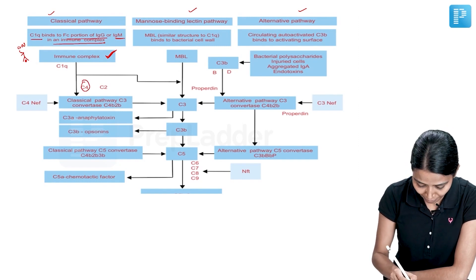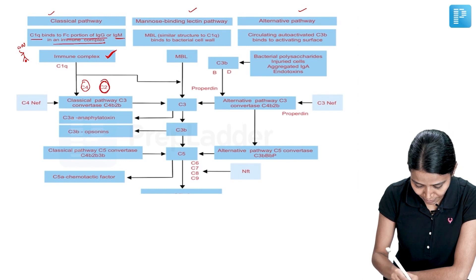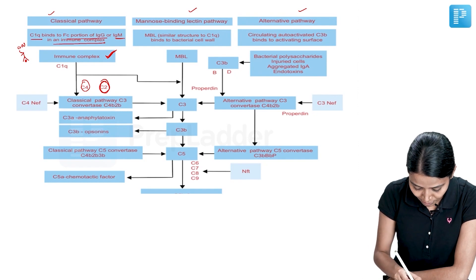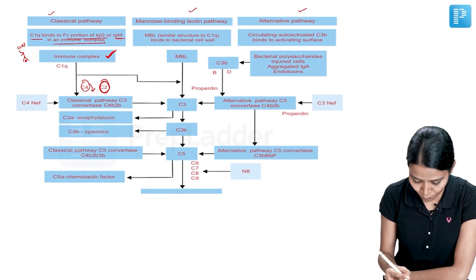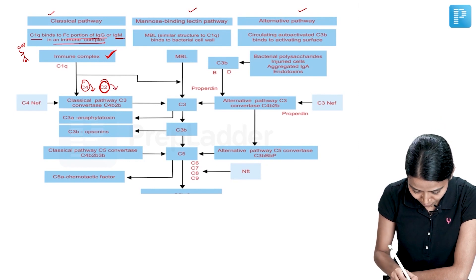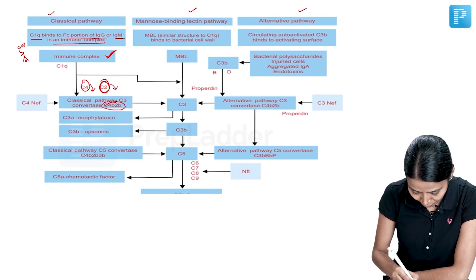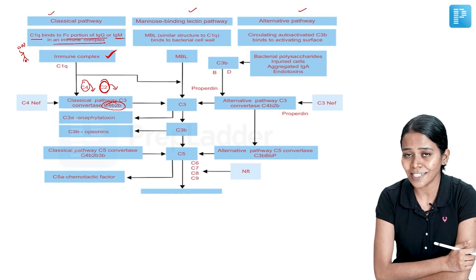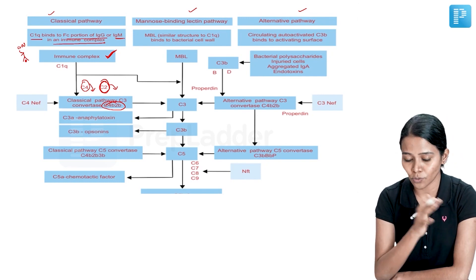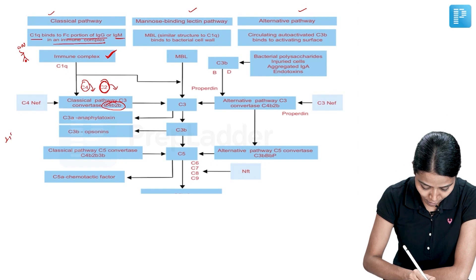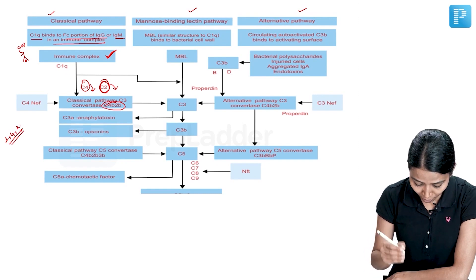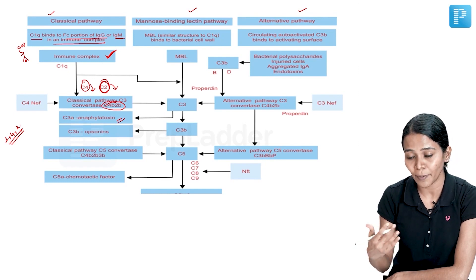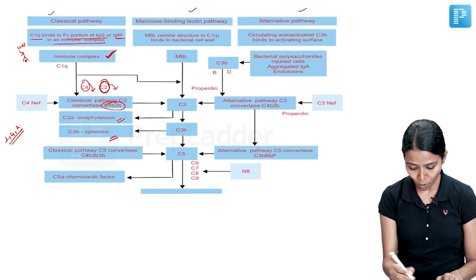What happens is it goes and activates C4 and C2, which forms something called C3 convertase. That is, C4 becomes the part of C4 called C4B and C2 becomes C2B. So these two will combine together and form something called C3 convertase. So C3 convertase in classical pathway is C4B and C2B. So till now, the complements that are involved are 1, 4 and 2. Now after this, the C3 gets involved. C3 gets stimulated, C3A becomes anaphylatoxin, C3B becomes opsonic.